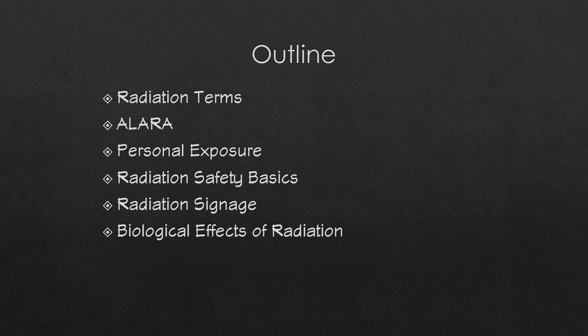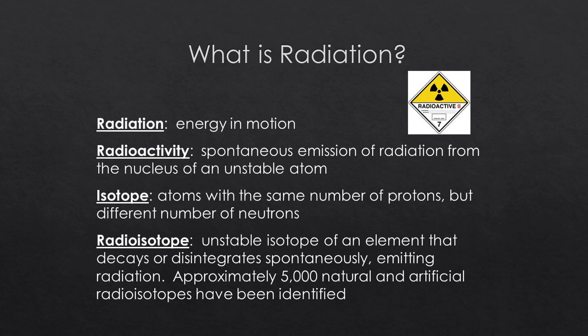First, what is radiation? Radiation is energy in motion. Radioactivity is a spontaneous emission of radiation from the nucleus of an unstable atom. An isotope is an atom with the same number of protons but a different number of neutrons. A radioisotope is an unstable isotope of an element that decays or disintegrates spontaneously, emitting radiation. Approximately 5,000 natural and artificial radioisotopes have been identified.